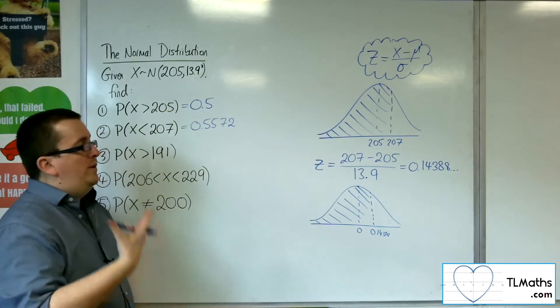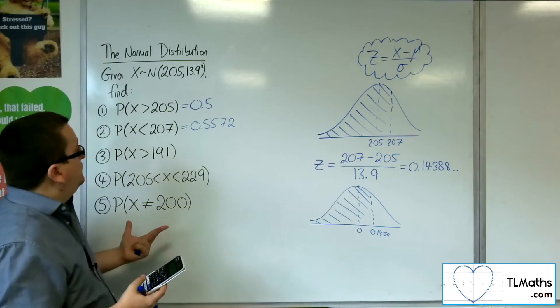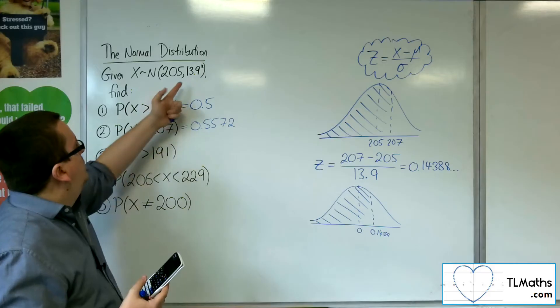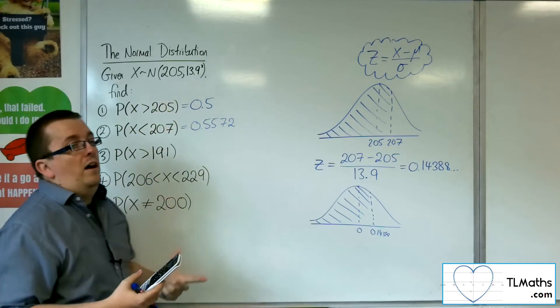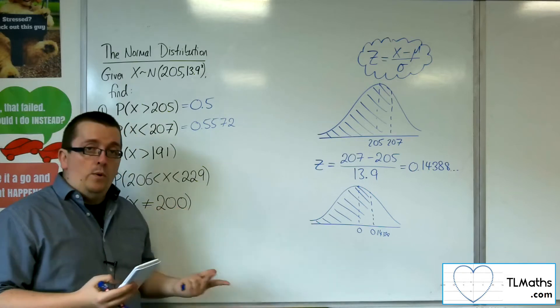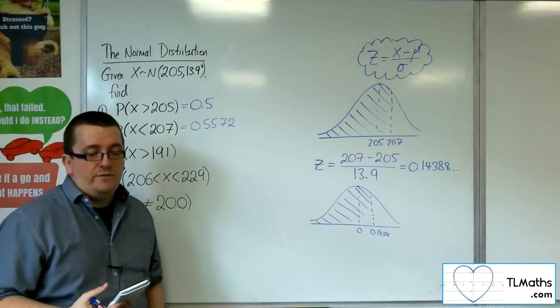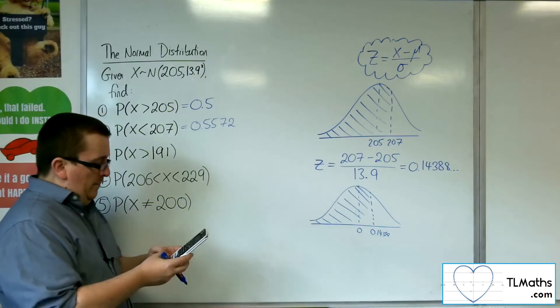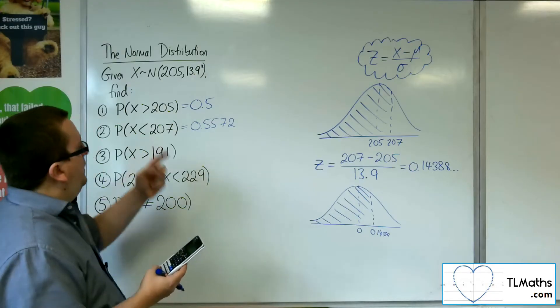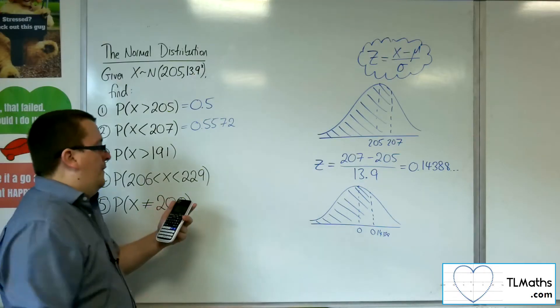If I was going to do this directly without converting it into z, which you should be able to do for the exam, then my lower figure, we want like 10 standard deviations down, which is 139 down. I can't be bothered to do all the mental arithmetic in my head, so just so long as you pick a number that's low enough. I could pick 0, that's 205 down, way more than 10 standard deviations. That's perfectly fine. Lower is 0, upper is the 207, then sigma is 13.9, and the mean is 205. And we get the 0.5572.